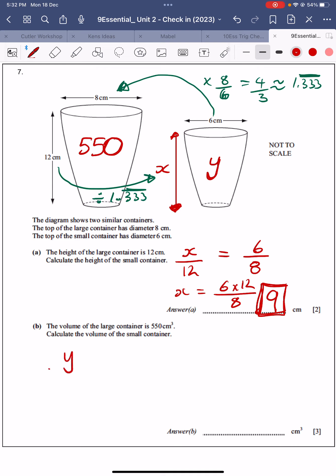Now, the volume ratios, y as a volume to 550, well, that equals the length scale factor as a ratio cubed. All right. So that's one way of doing it.